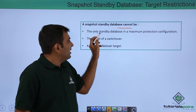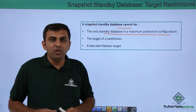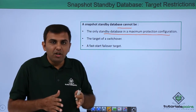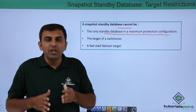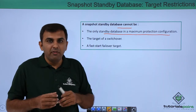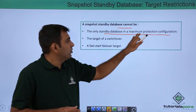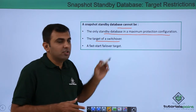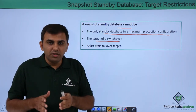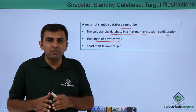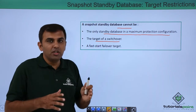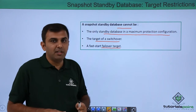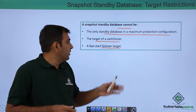The Snapshot Standby Database cannot be the only standby in a maximum protection configuration. If your primary and standby are in maximum protection mode, and you convert the physical standby to snapshot standby, redo is not applied and the primary will shut down. Also, the snapshot standby cannot be the target of a switchover — you must convert it back to physical standby first. Similarly, it cannot be used as a fast start failover target.